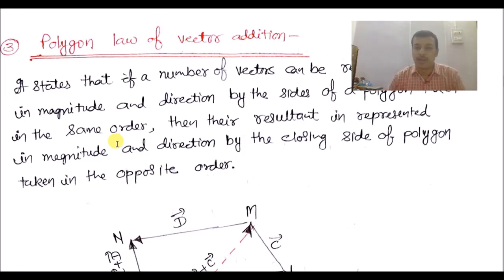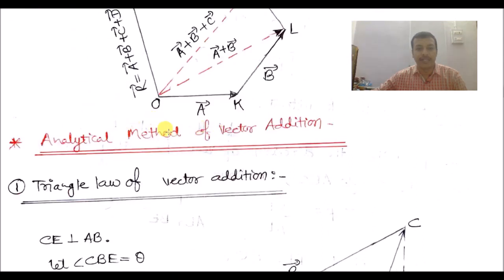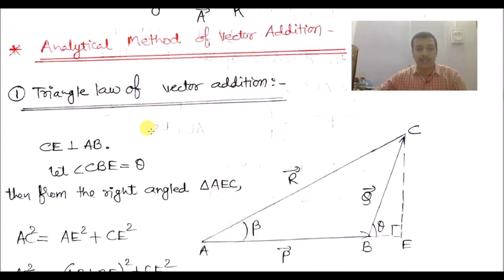We have seen the triangle law, parallelogram law, and polygon law of vector addition. Now we need to discuss the mathematical or analytical treatment of these laws — specifically the formulas relating P, Q, and R, the angle between them, and how to find their magnitude and direction.